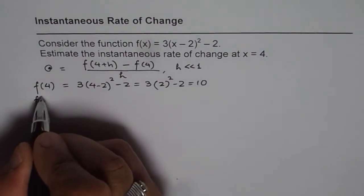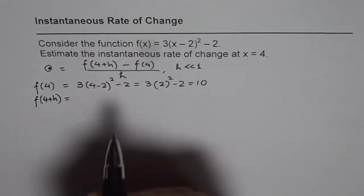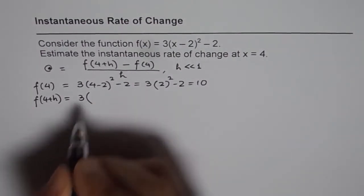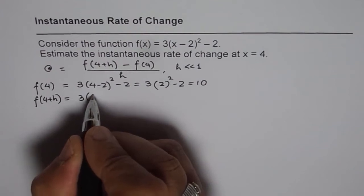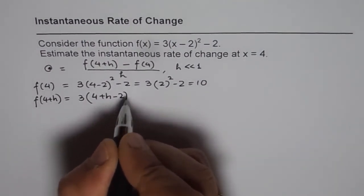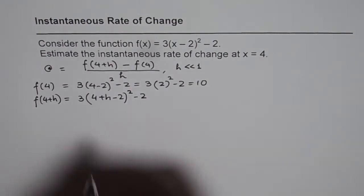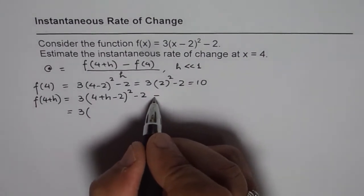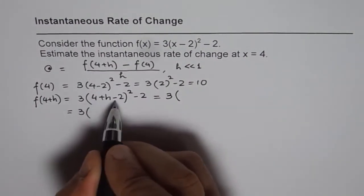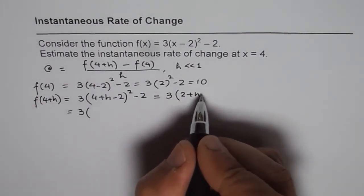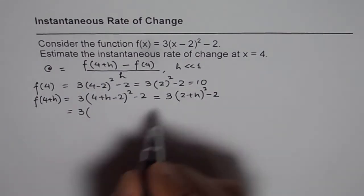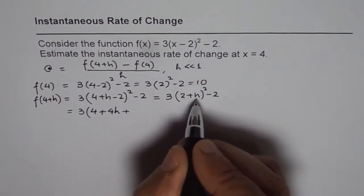Now what is f(4 + h)? Substitute 4 + h for x, so we get 3(4 + h - 2)² - 2. Now we can expand it. So 3 times, rather first I will simplify this. I can write this as 3(2 + h)² - 2. Now I will expand it, so I get 2² which is 4, plus 2ab which is 4h, plus h², minus 2.